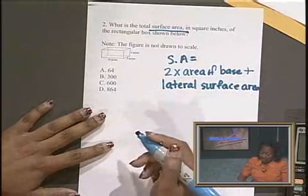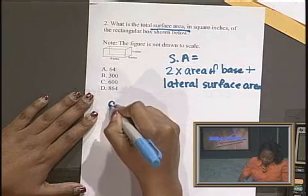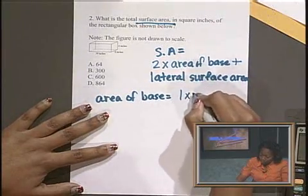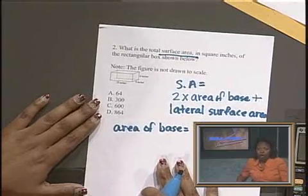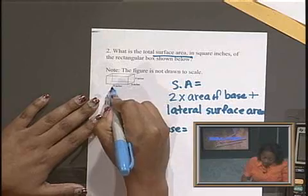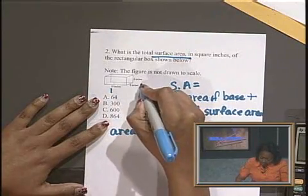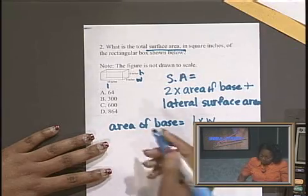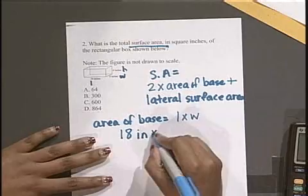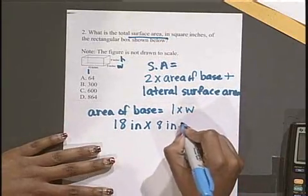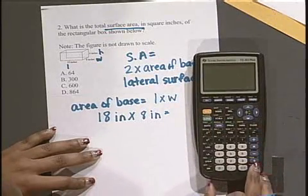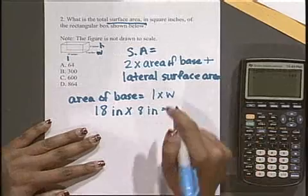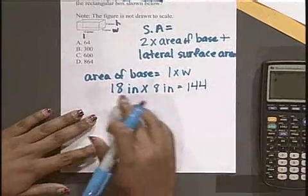So now we need to find the area of the base. The area of the base equals the length times the width. So let's identify the length, width, and height of our box. Here is our length. So I'm just going to put L. 8 represents the width. And our height is 6 inches. So the area of the base is L times W. I'm going to plug in these numbers. 18 inches times 8 inches. I'm going to use a calculator. 18 times 8 equals 144. So now we have our area of base.